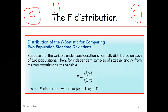These two population standard deviations are unknown and we want to compare the equality of these two population standard deviations. The null hypothesis H naught will be sigma 1 is equal to sigma 2 — the two population standard deviations are equal in magnitude. We have to select a random sample of size n1 from population 1 and a random sample of size n2 from population 2.